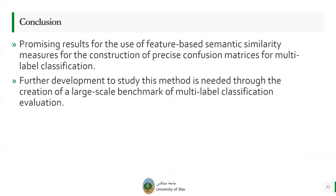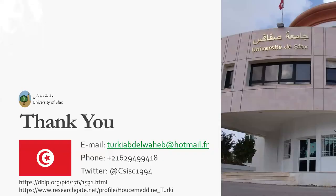In conclusion, there are promising results for the use of feature-based semantic similarity measures for constructing precise confusion matrices for multi-label classification. Further development to study this method is needed through the creation of a large-scale benchmark for multi-label classification evaluation. Thank you for having me here. I leave the floor for questions and answers — here are my contacts; feel free to reach me for further details about this work or any work on semantic technologies.